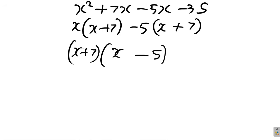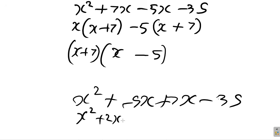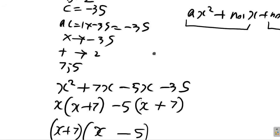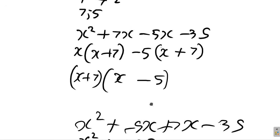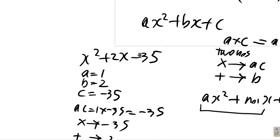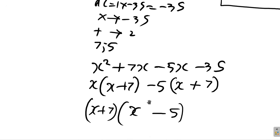If you multiply it out: x times x is x squared, x times negative 5 is negative 5x, 7 times x is 7x, 7 times negative 5 is negative 35. So you get x squared plus 2x minus 35, which is exactly the original expression. When you factorize x squared plus 2x minus 35 you get (x plus 7)(x minus 5).